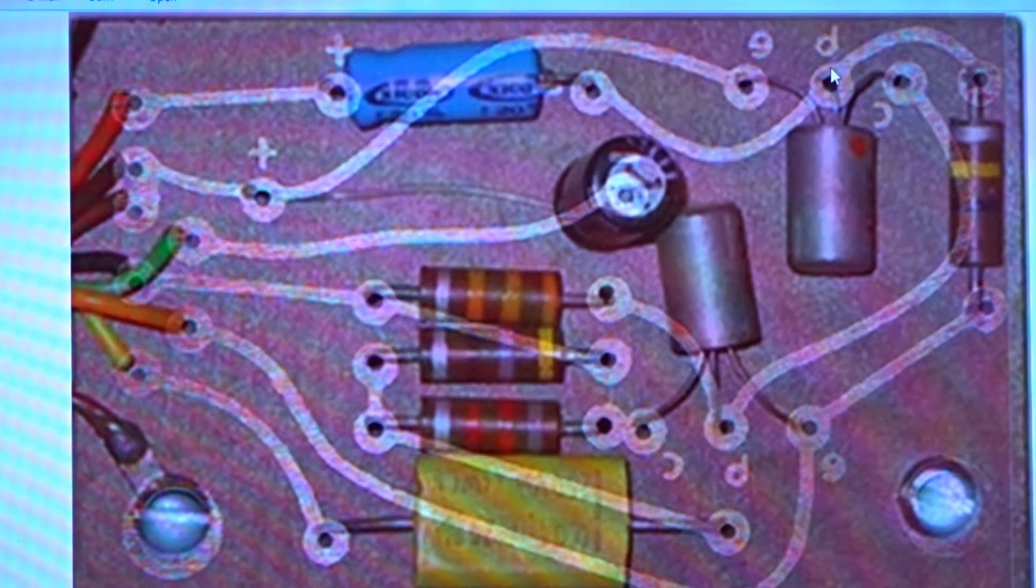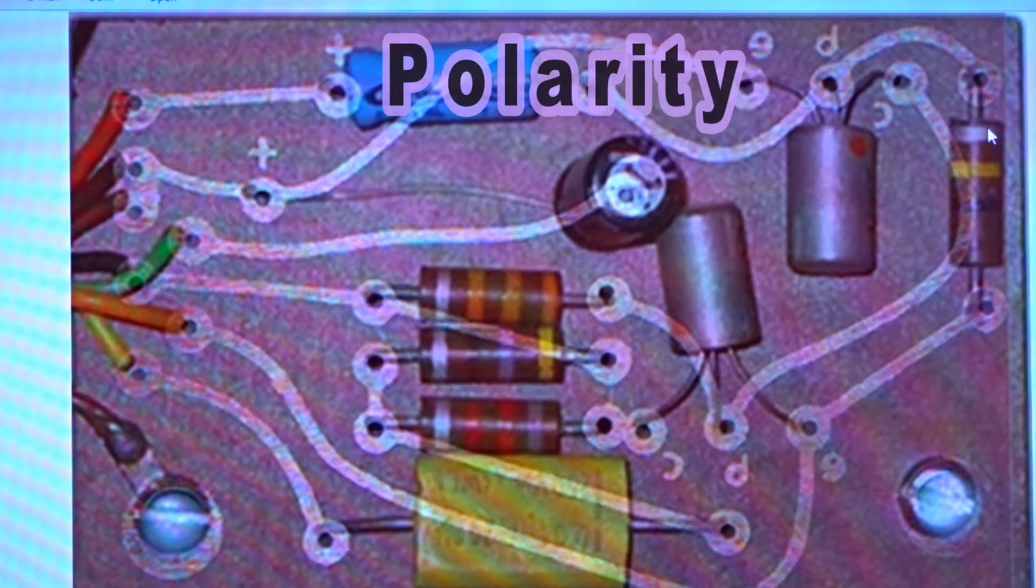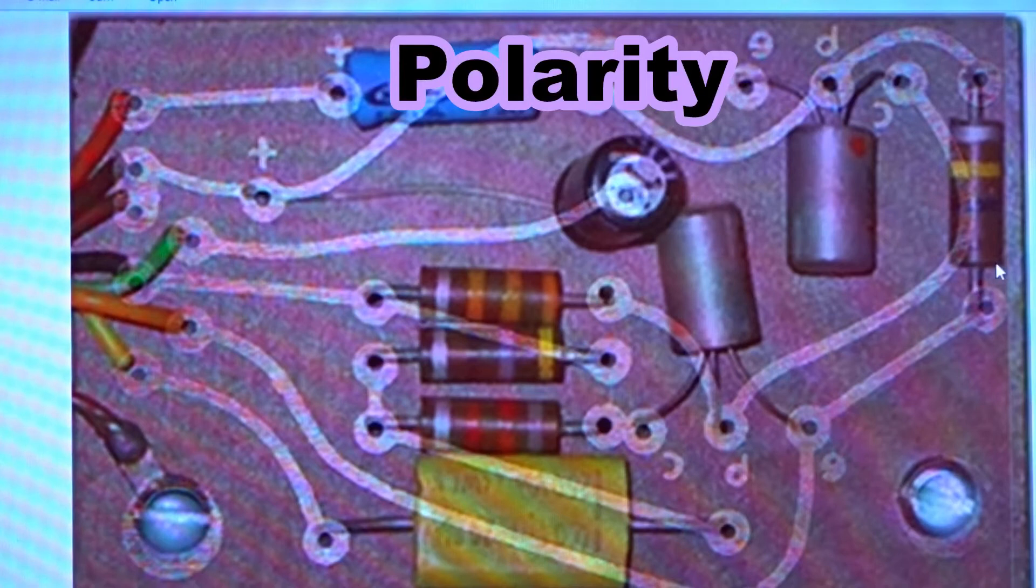So we come from the negative side of this cap into the middle part of the transistor. That trace runs over to your resistor. Now your resistors do not have tolerances - they have colors. Gold and silver stripe indicates tolerance: 5%, 10% tolerance. Your colors represent the resistance of that resistor.